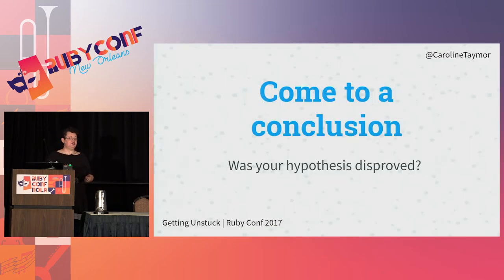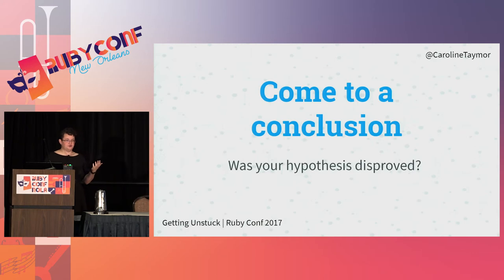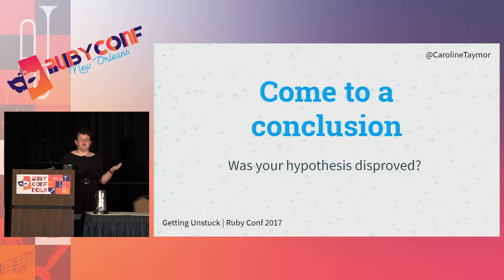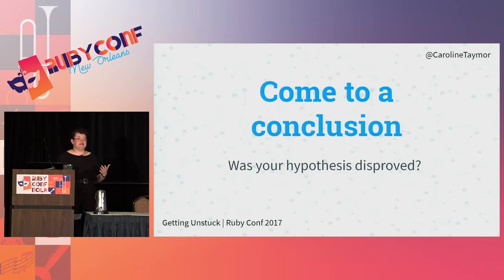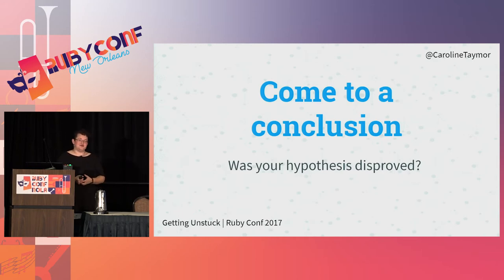Then you come to a conclusion. Was your hypothesis disproved? Do you feel like you know what the cause of your bug is? Maybe you still have no idea — but that's actually great, because before you had 6,000 possibilities and now you have 5,999. That's actually fewer possibilities that your software could be breaking, and it helps you move forward.